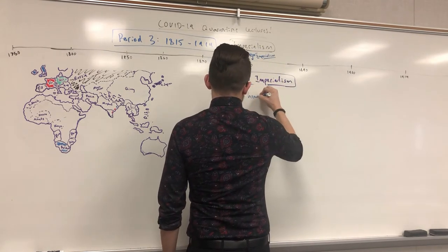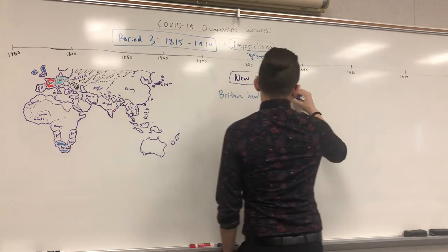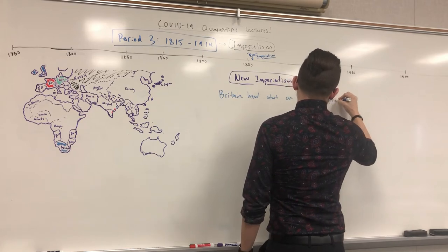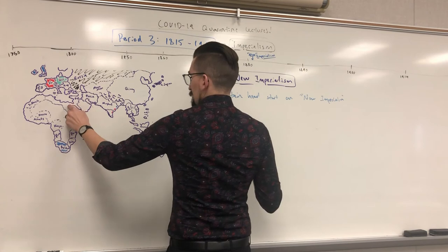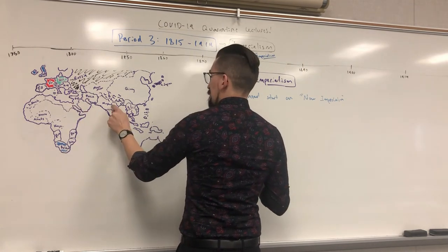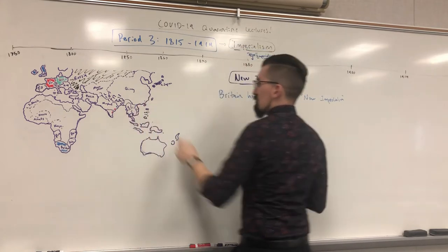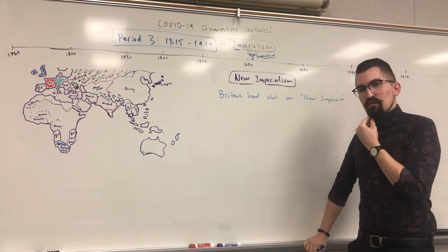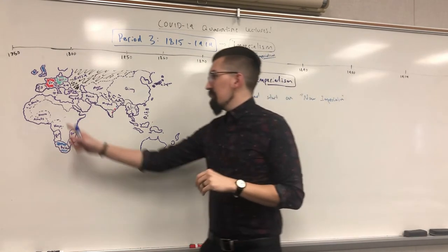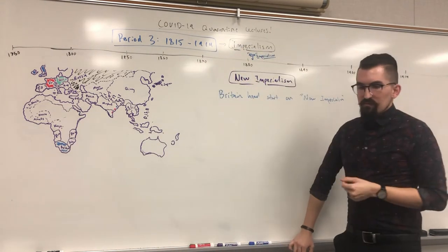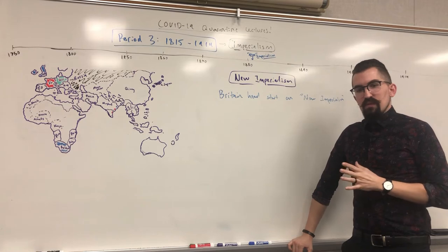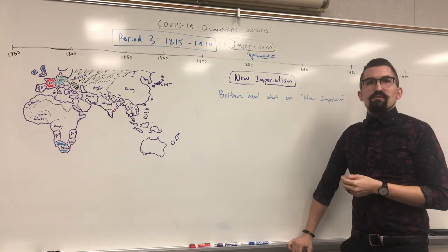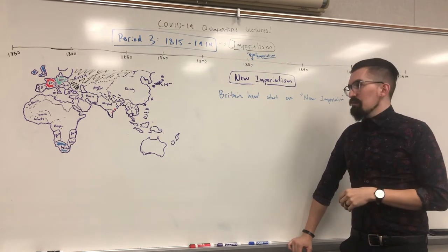Britain got a head start on this new wave of imperialism in several areas: North Africa, South Africa, South Asia and India, Southeast Asia, and China. They're going to control almost a quarter of the entire earth at one point, because they got a nice head start. The US too, and France somewhat in North Africa, but it's largely Great Britain that jumps far ahead of everybody else.